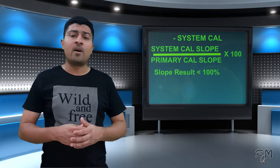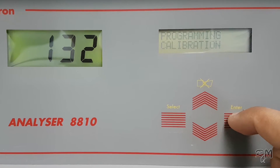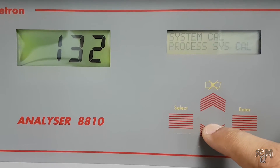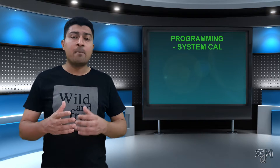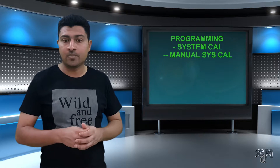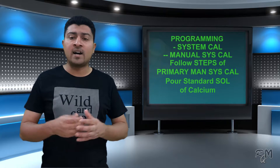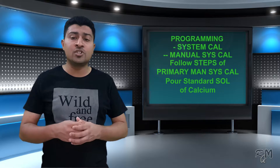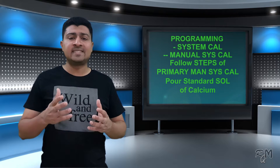There are two methods to perform system calibration: number one, manual system calibration; and number two, process system calibration. Before performing any calibration, make sure the analyzer is in stop mode. Then go to the programming menu, press and hold the enter key to enter programming menu, go to system calibration, select manual system calibration and press enter. For manual system calibration, follow all steps as we did for primary manual system calibration — pour standard solution when the analyzer asks, and after completion of titration enter the concentration of the standard solution when the analyzer demands. At the end it will show a slope value which will be less than 100%.